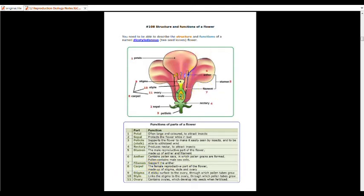So, this is the filament, this is the anther. The anther is the place where the pollen grain is found. Inside the pollen grain is where the male gamete is formed. It is where the male gamete is.